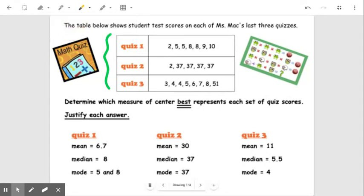So if I look at quiz one, if I look at these scores right here and I'm looking at these three measures of center, well, right away when I look at this, I know I'm not going to use mode because it's two fives and two eights, but I've got other numbers going on. So I have a mean and I have a median that I could consider.